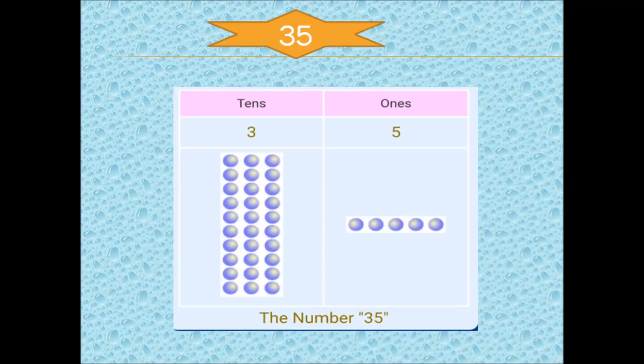Now let us take another example, 35. In the number 35, in the 1s place, we will have 5 and in the 10s place, we will write the number 3. So 35 is made up of 3 tens and 5 ones.